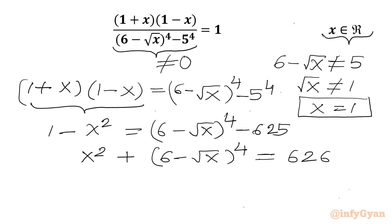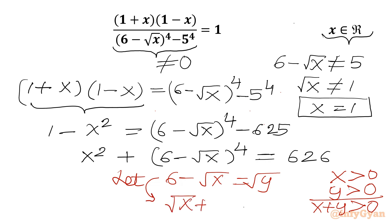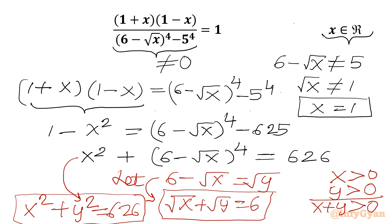Now I will use substitution. Let 6 - √x = √y. For real solutions, x and y should both be positive. From the substitution, we get √x + √y = 6 as equation 1. Substituting back, our equation becomes x² + y² = 626. So our new system is: √x + √y = 6 and x² + y² = 626.